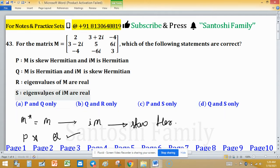This statement Q is true. Eigenvalues of M are real - this point we also discussed: eigenvalues of Hermitian matrix are always real.